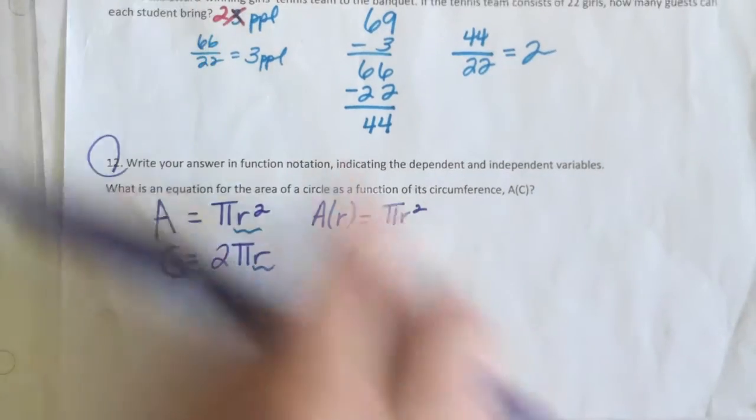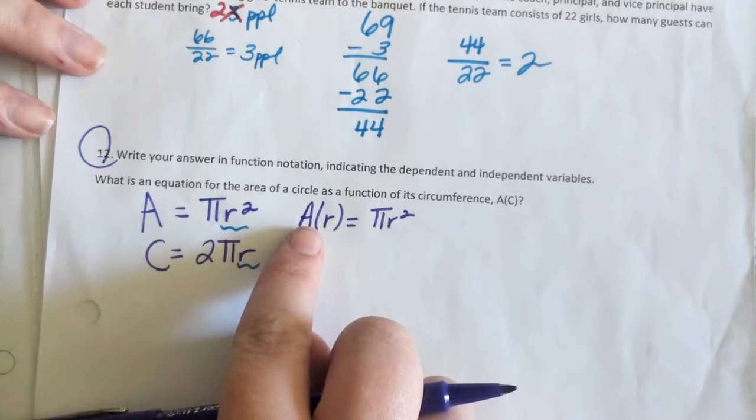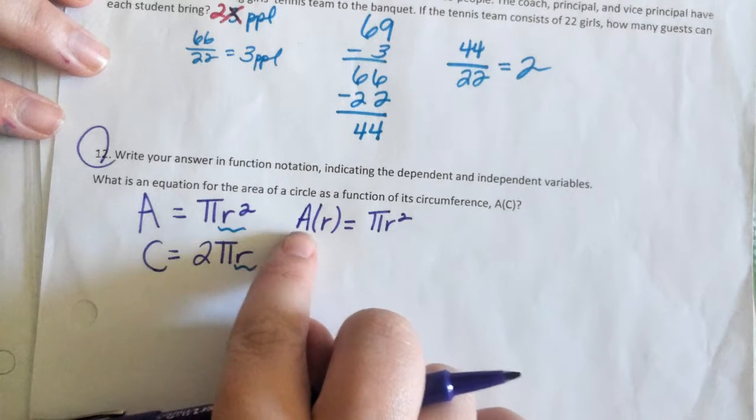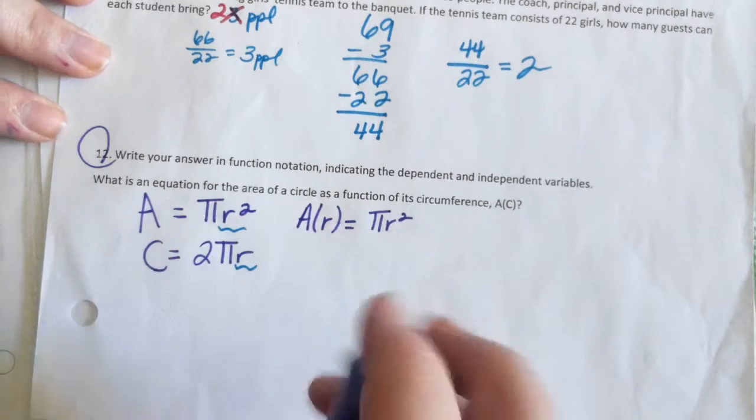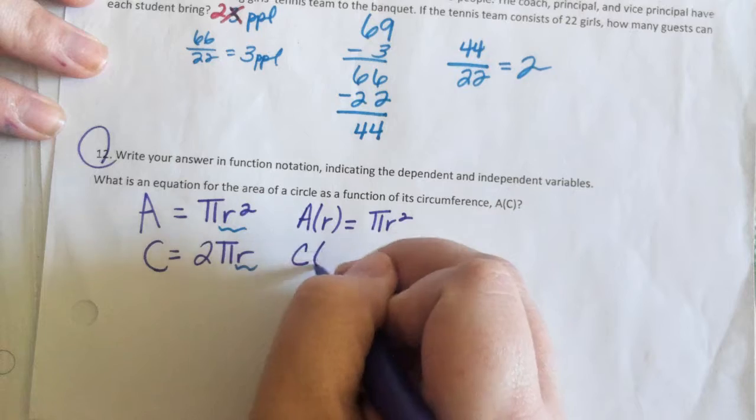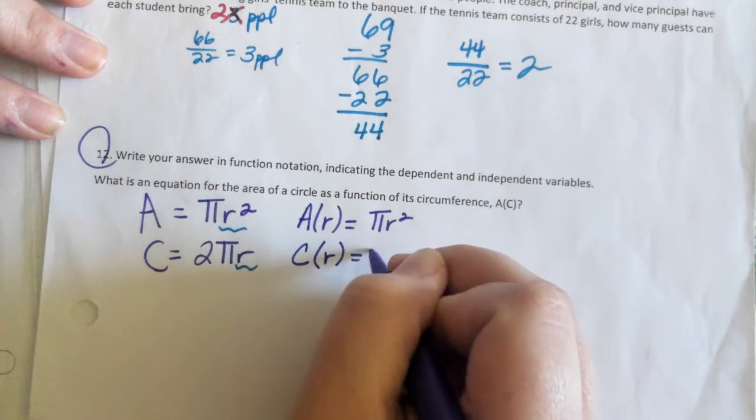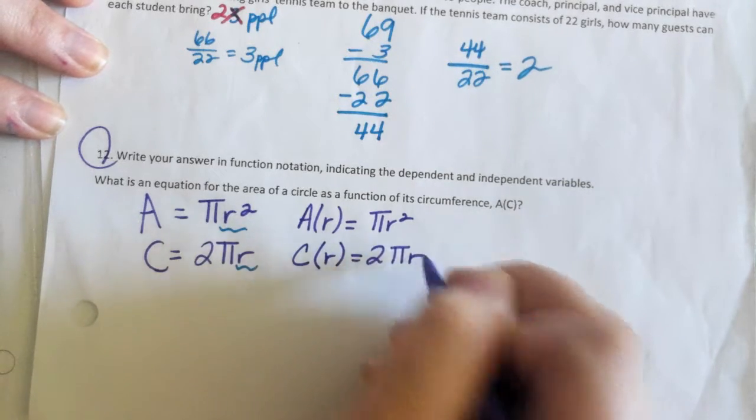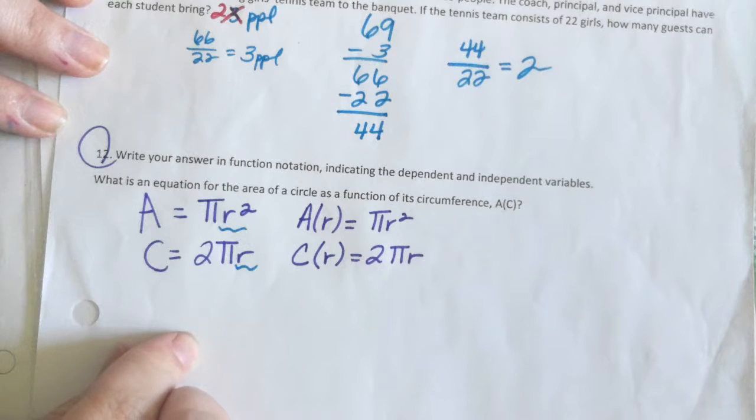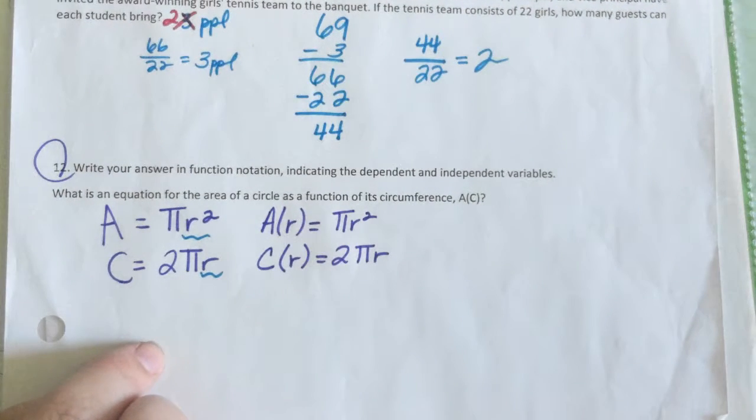Technically, we need the radius to get the area. So what we actually have is area as a function of radius. In fact, we also have circumference as a function of radius. We need r in order to figure out A. We need r in order to figure out C. We need them.